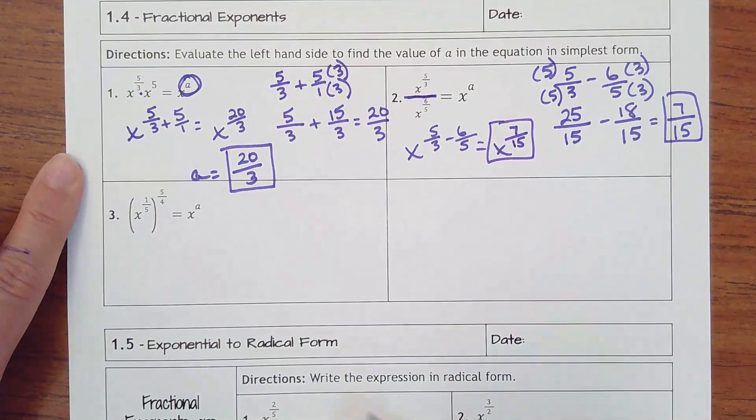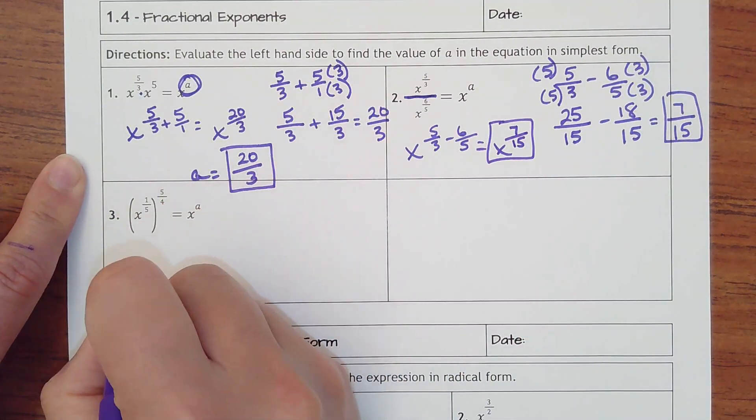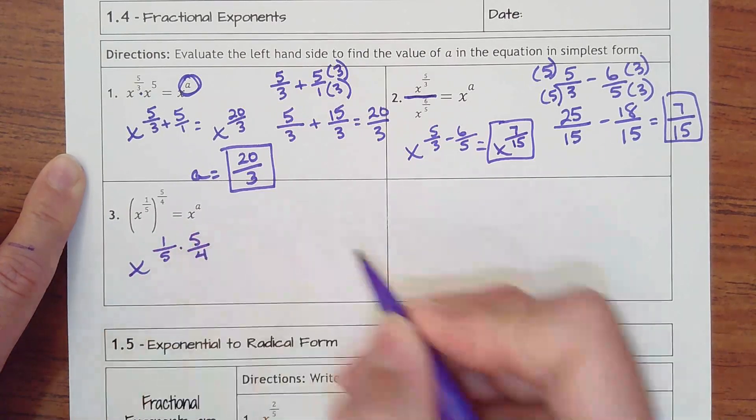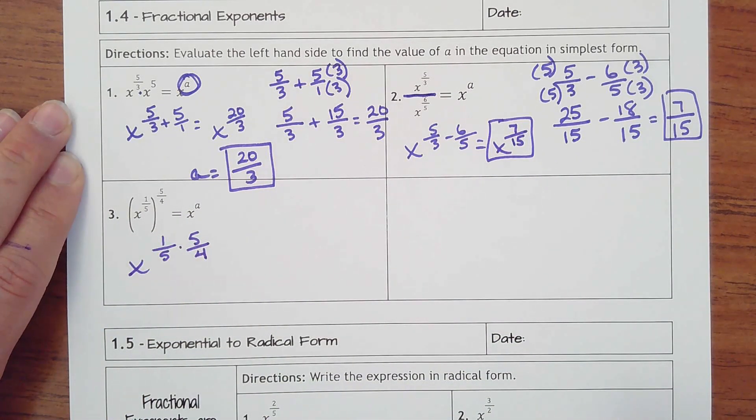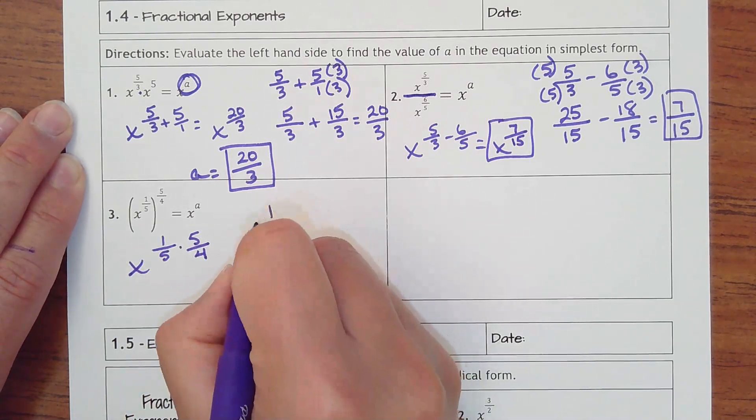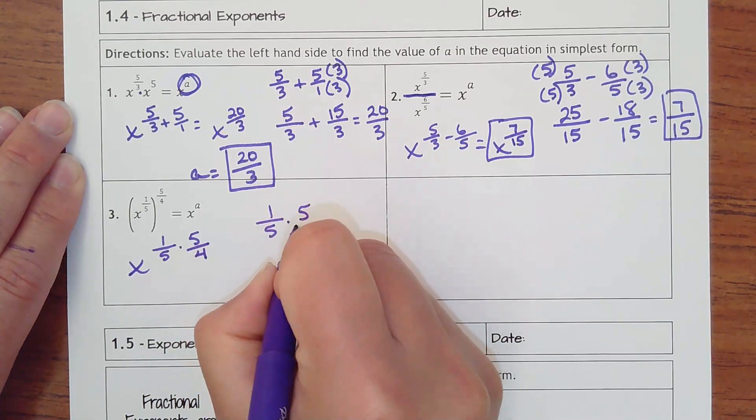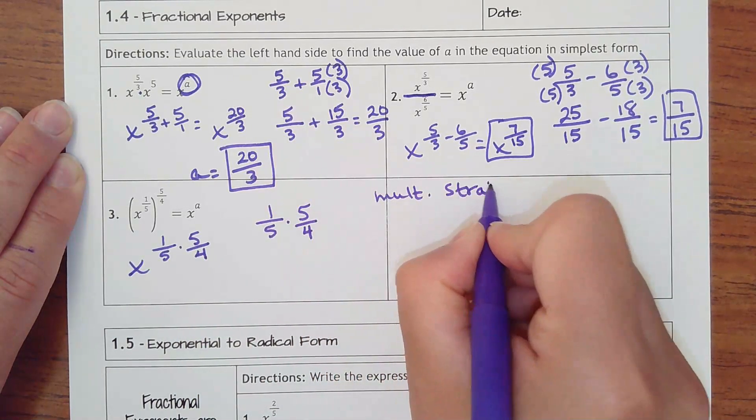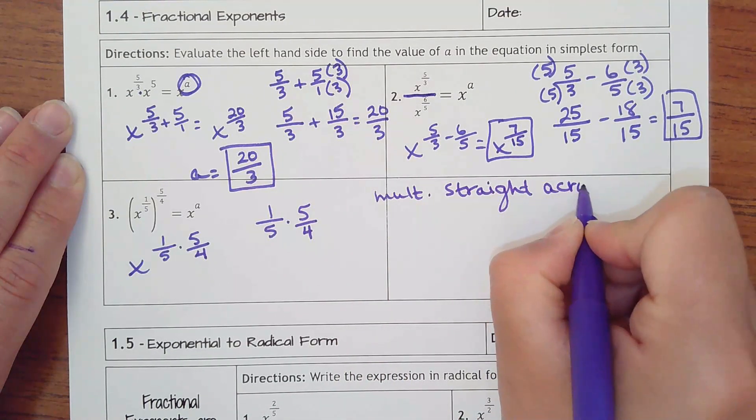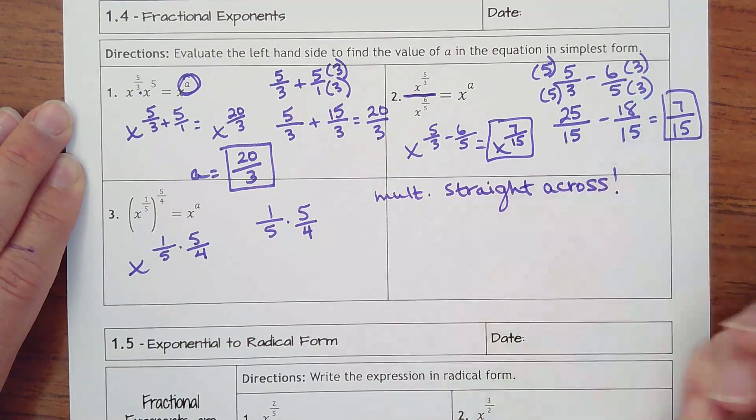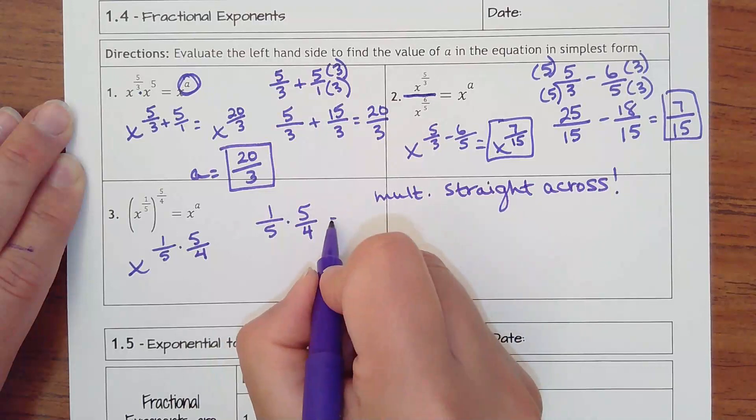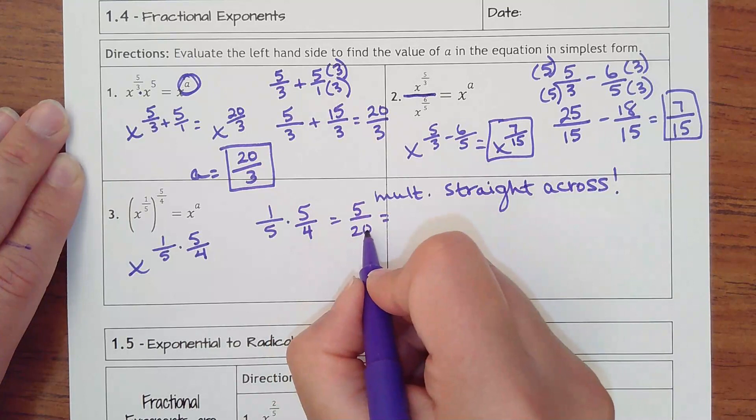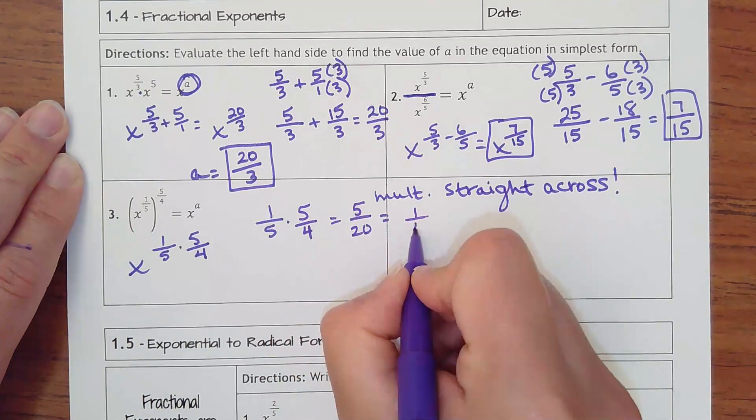And then number three—this is your exponent raised to a power, so your power rule. That means keep the base and we multiply the powers. I love multiplying and dividing fractions because you don't need a common denominator; you can just multiply. When you multiply, you multiply straight across. That means multiply your numerators, multiply your denominators. One times five is five; five times four is 20.